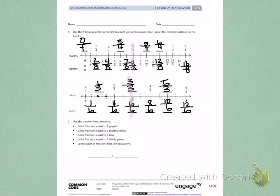Going back to number 2, it tells me to color fractions equal to 2 fourths yellow. When I see 2 fourths, I know that fraction is 2 as the numerator and 4 as the denominator. So, I'm going to find 2 fourths. It's right here. The fraction that's right below 2 fourths is 4 eighths. So, 2 fourths and 4 eighths are equal.